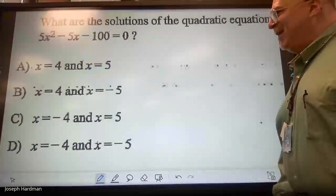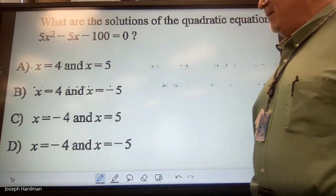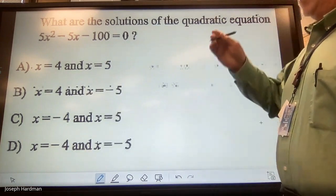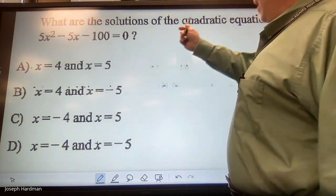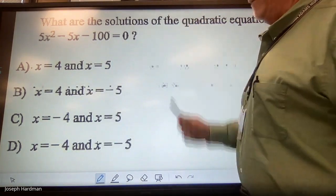What are the solutions of the quadratic equation 5x² - 5x - 100 = 0? We have an equation here. The quadratic means in most cases we're going to have two answers.